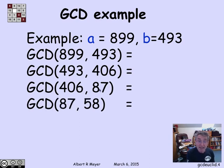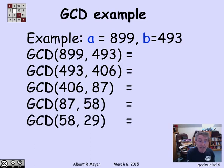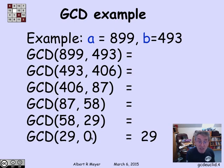Dividing 406 by 87, I get that 87 and 58 have the same GCD. Dividing 87 by 58, I get that 58 and 29 have the same GCD. And now I win, because when I divide 58 by 29, I get a remainder of 0.